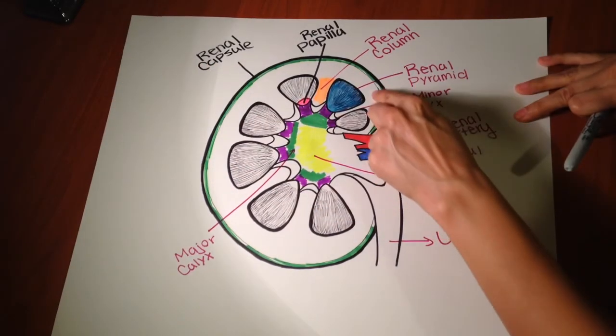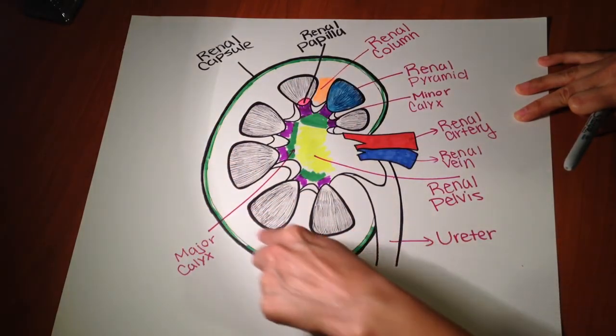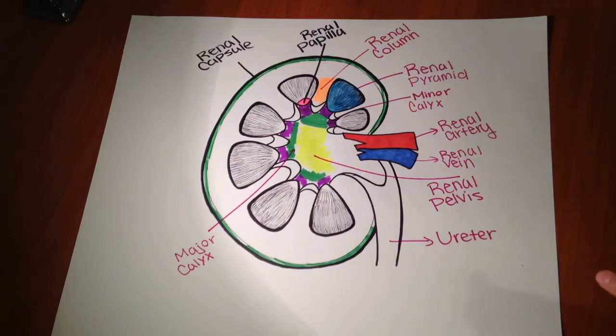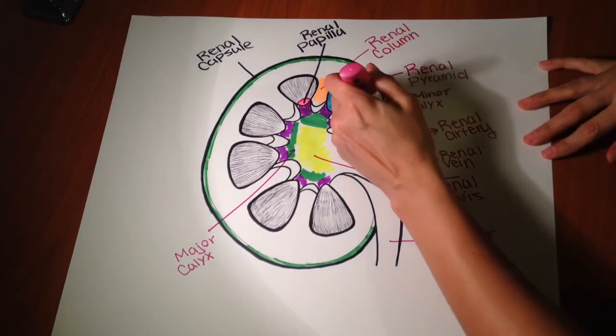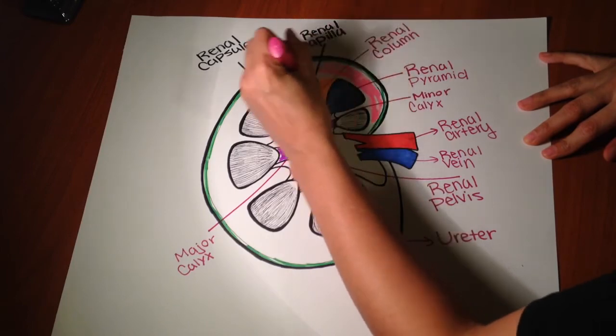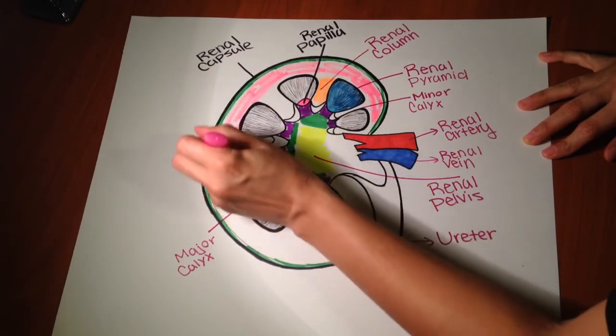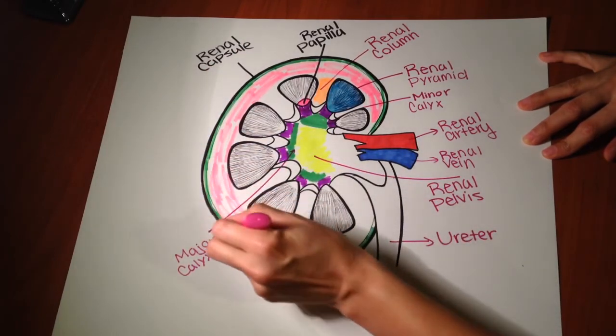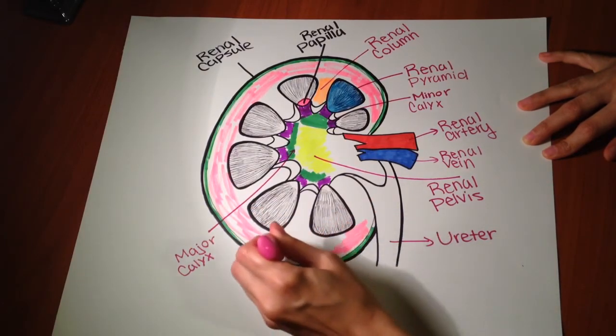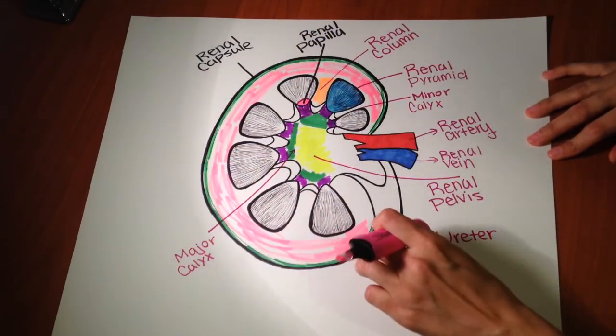And then the next layer here, outside of the renal pyramids and renal columns, you have the cortex, the renal cortex. So I will use pink for that. So all this area over here, everything here in pink, this is the renal cortex.